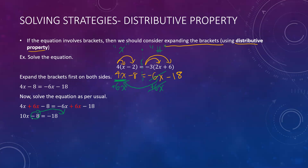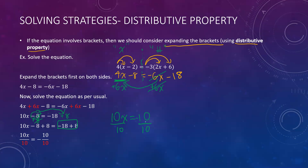I'm going to move that negative 8 to the other side by adding 8 to both sides to keep the equation balanced. I added 8 on purpose so there are no constants on their own on the left-hand side. So 10x minus 8 plus 8 on one side, and negative 18 plus 8 on the other, gives us 10x equals negative 10. My last step is to divide both sides by 10. I end up with negative 1.